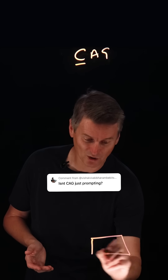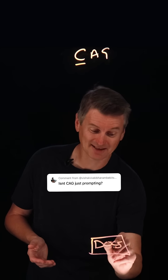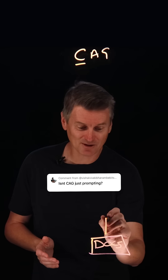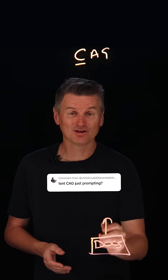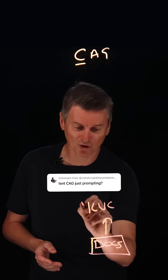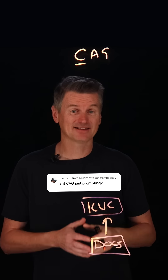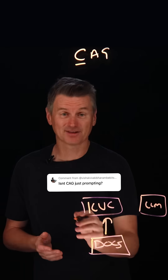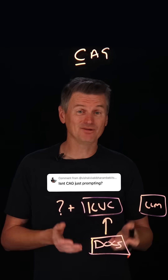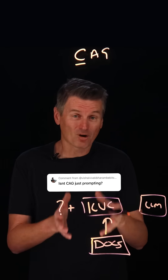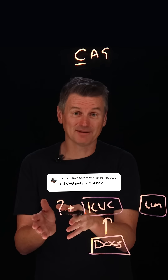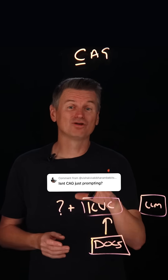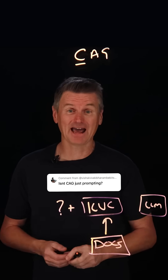The LLM encodes your documents — your basically blob of knowledge — in a single forward pass into the key value cache, or the KVC. The prompt contains both the user's input and also the KV cache, and all of those knowledge tokens do not have to be reprocessed again because they already have been.